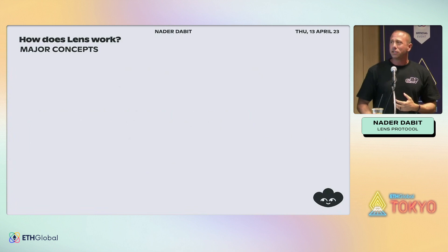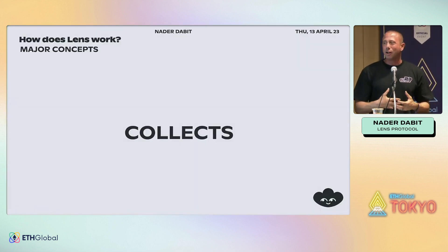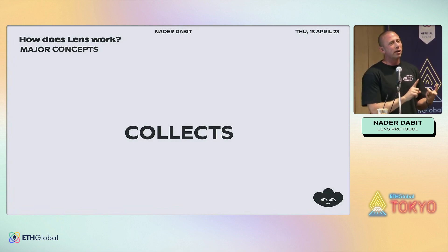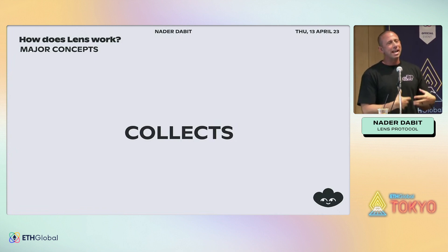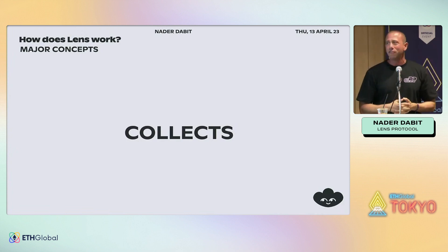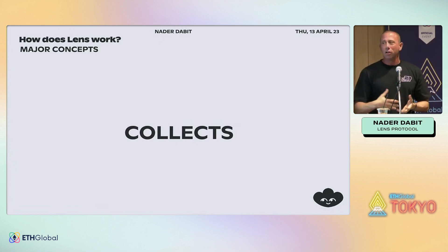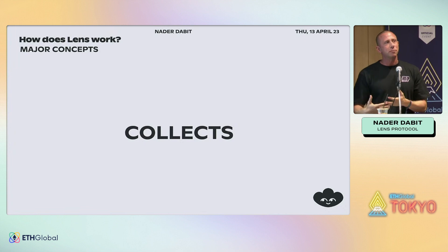Collects are really interesting. In Twitter you have a like, a comment, and a retweet; in Lens you have a like, a comment, a mirror, and a collect. A collect is when you take a piece of content someone's put out and mint it into a digital asset — essentially an NFT — with a lot of custom functionality possible. It enables you to financially support people, and at scale this can be significant. You only need a few thousand people to collect at a small amount to make a large impact.